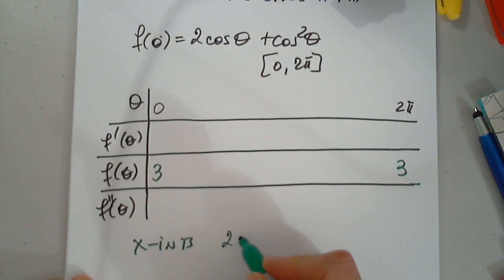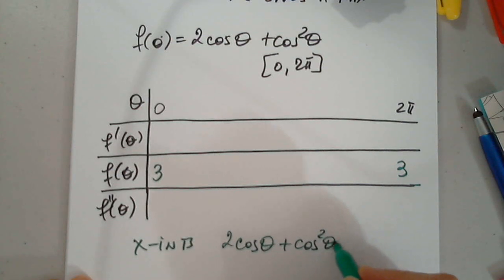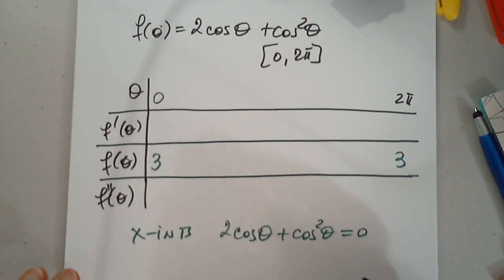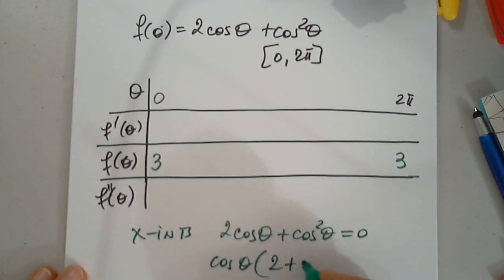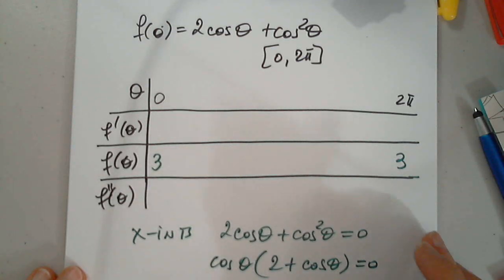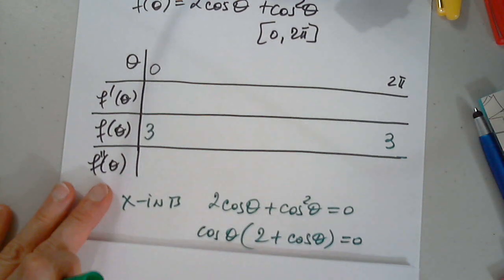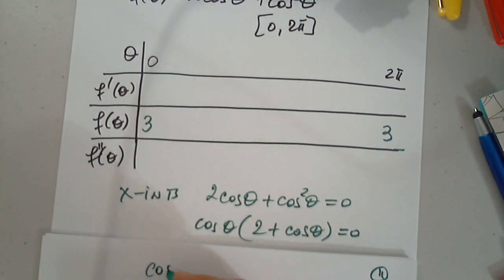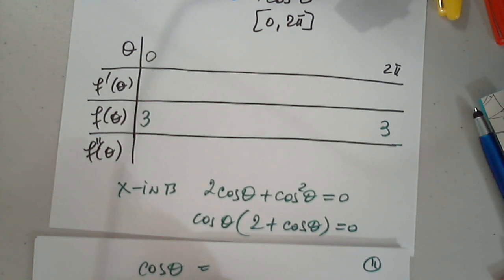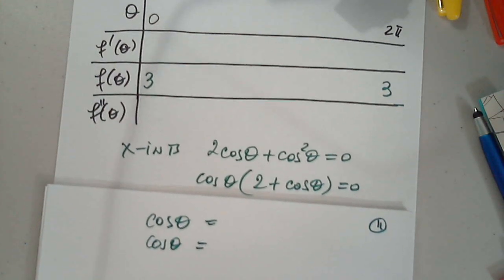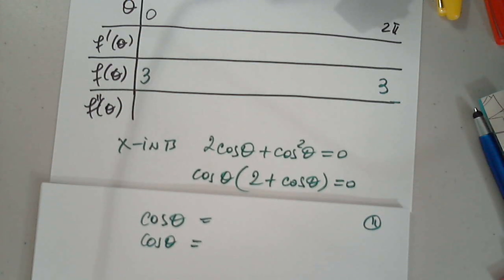So then I have two cosine theta plus cosine squared equals zero. Of course, I have to factor out cosine theta, and then two plus cosine theta. What are the options? Josh, what are the options now? Cosine theta equals zero and cosine theta equals negative two.